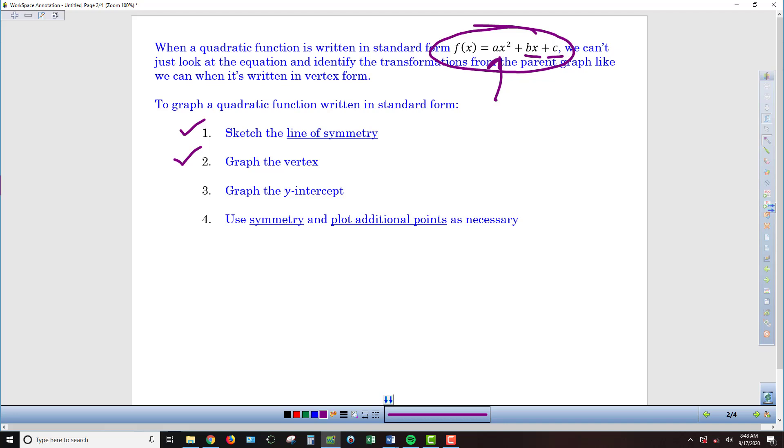We're also going to get the y-intercept by just looking at the equation, because that's the value of that c number in the equation, the number that's not connected to any x's. Then if necessary, we'll use some symmetry or plot some additional points. We might have to plug in a number or two into our equation to finish off the graph to get a good sketch.